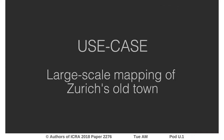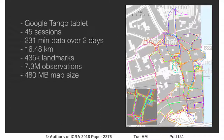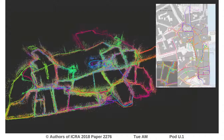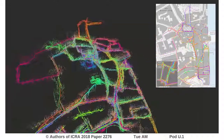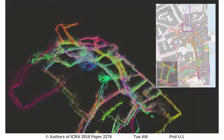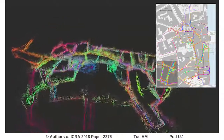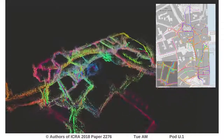MapLab also supports large-scale maps covering several city blocks. The old town of Zurich was mapped to demonstrate the large-scale capabilities of MapLab. The dataset contains 45 sessions with a total length of 16 kilometers. The maps are successfully co-registered and optimized to yield a consistent reconstruction of the city topography that aligns well with the actual map of the area.